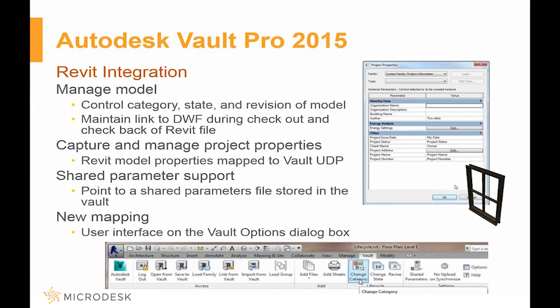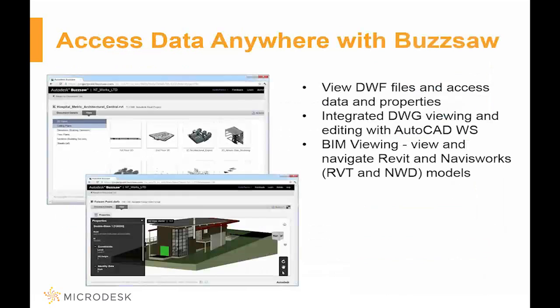Vault achieves this through Revit integration. You can manage files by uploading them to Vault and saving them there. Vault can see some of the properties and map different things. You can pull files into the Revit project directly from Vault, which is beneficial if you're trying to coordinate a couple of different offices' worth of content or trying to save and share your sheets.